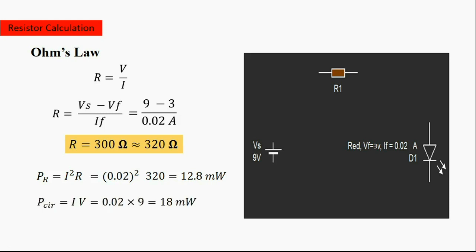This is the formula for calculating the total power of the circuit: total power equals current multiplied by voltage. With a current of 0.02 amperes and a supply voltage of 9 volts, the total power of the circuit is 18 milliwatts.